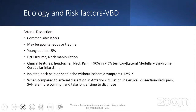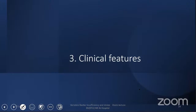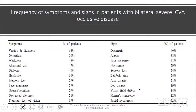Less common etiologic factors include subclavian steal syndrome, giant cell arteritis, Fabry disease, MELAS, migraine, PRES, and RCVS — all causing posterior circulation features. Now, looking at the clinical features: the most frequent symptoms are vertigo and dizziness, which always confuse us in the emergency or outpatient setting. One clue: if there are vascular risk factors and the patient is above 50 years, we should give importance and rule out stroke. Other symptoms include weakness, dysarthria, abnormal gait — 25% of elderly have gait imbalance only with VB insufficiency — diplopia, headache, memory loss, face numbness, nausea, vomiting, decreased alertness, and transient loss of vision.